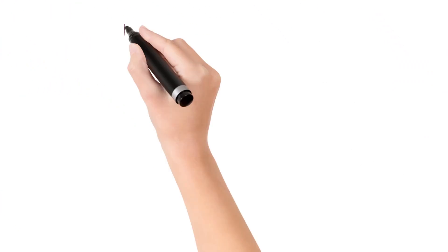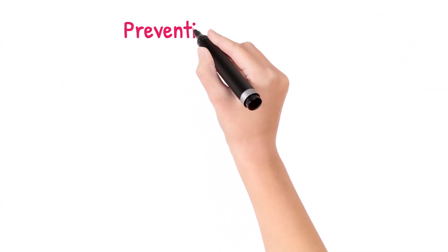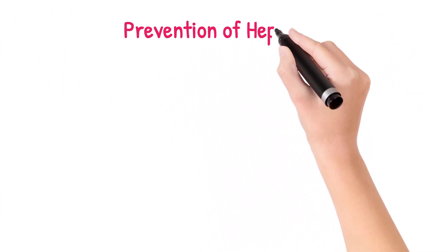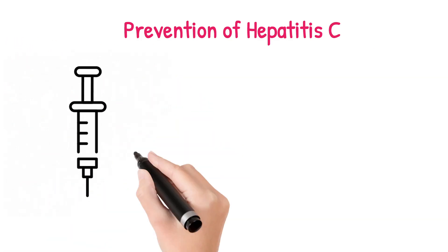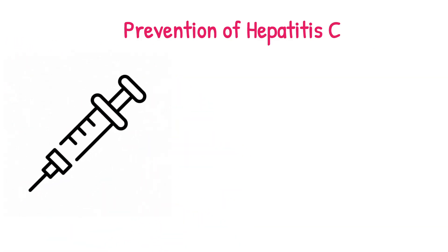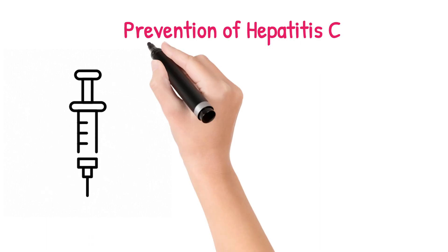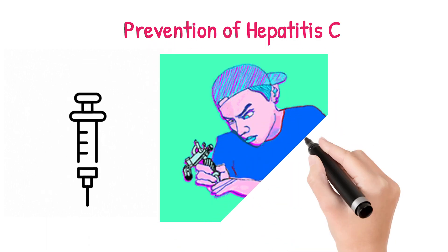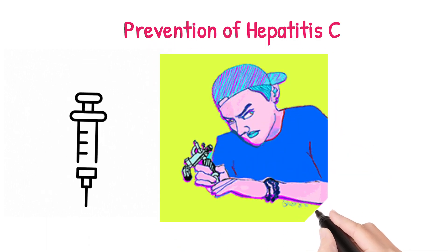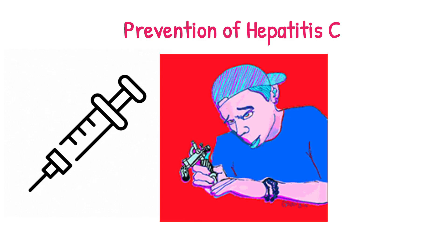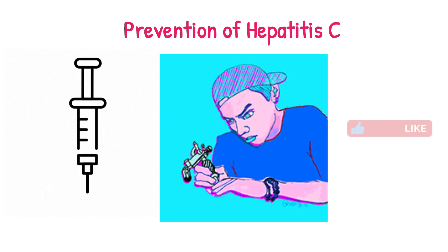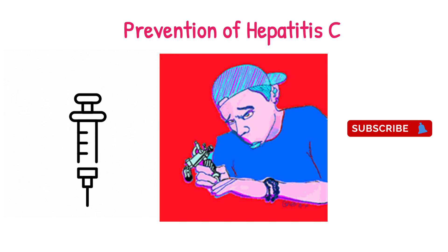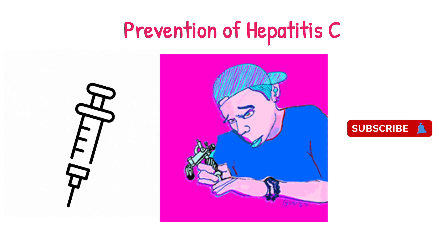Coming to the prevention, we can prevent Hepatitis C by using disposable syringes. Whenever you go for tattooing, ear-piercing, or any kind of treatment, please do not use contaminated needles or syringes. Use sterile or disposable syringes and needles.